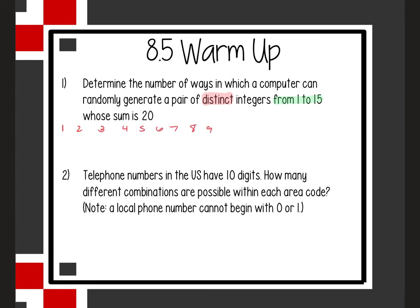If you need the visual, draw it out; if you can do this in your head, that's okay too. A pair means it's going to pull two numbers. Remember when dealing with a computer's randomly generated number, it would be a fresh set each time — like with replacement. Working from the high end down: if I get a 15, I can pair it with a 5. So 15 and 5 is one pair.